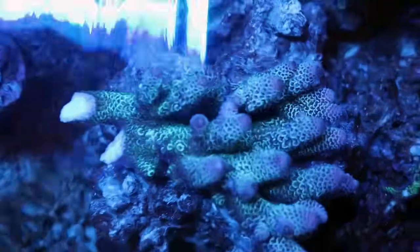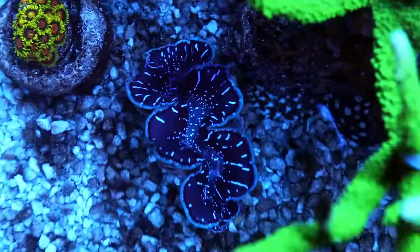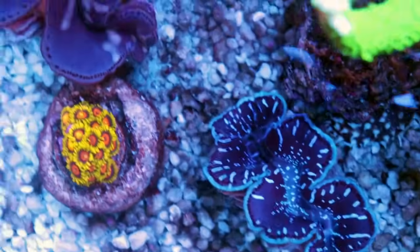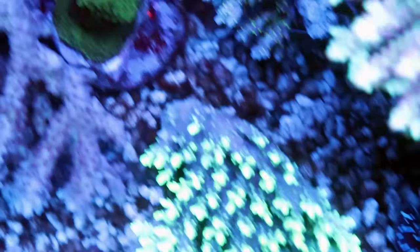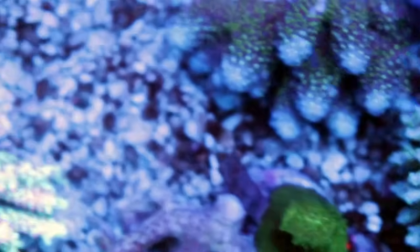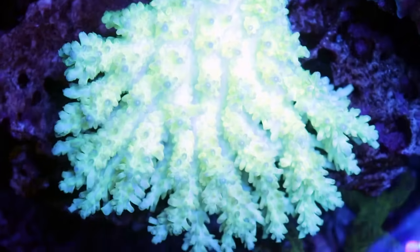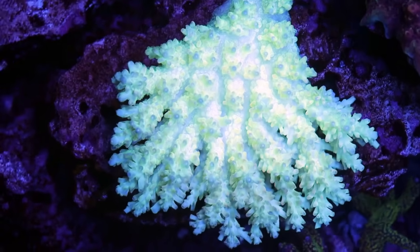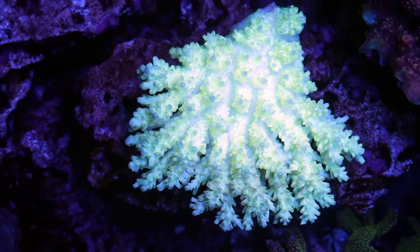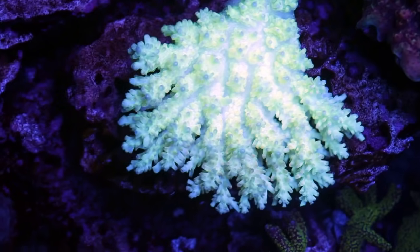Let's check out some of the other beautiful acros that we got. It's a nice spatulata. Oh, the clams. We haven't had clams in a while. Maxima clams. Check these out. Really nice sizes. Some bonsais. Lights are a little bit blue right now.